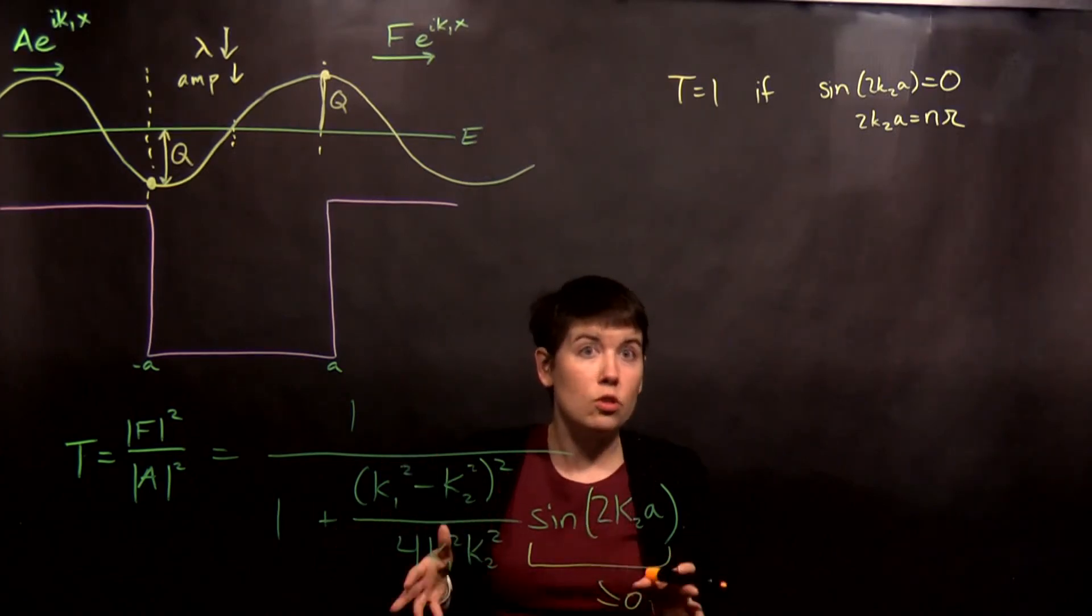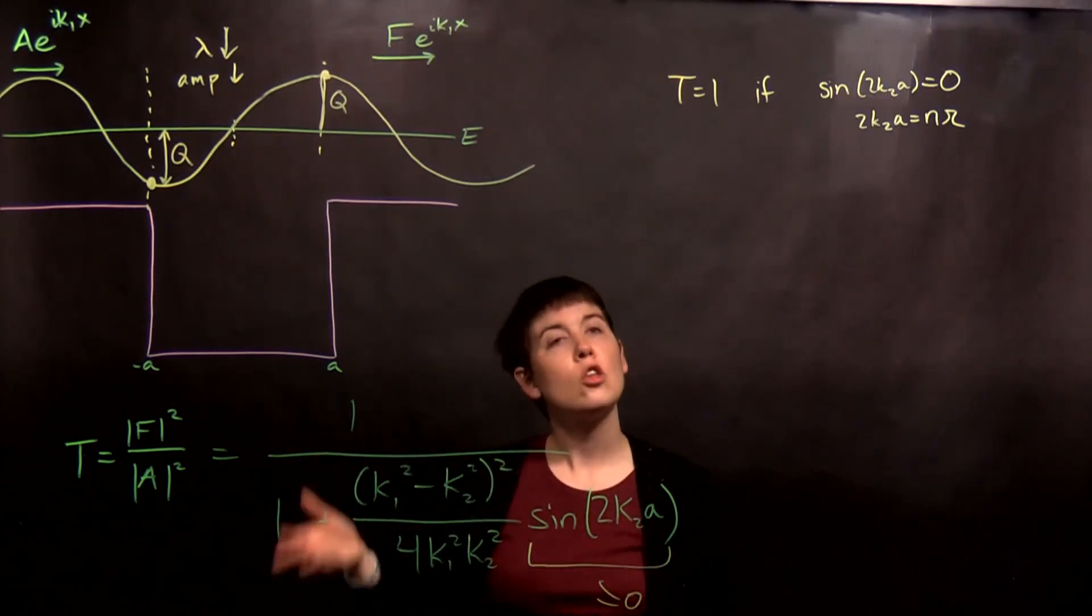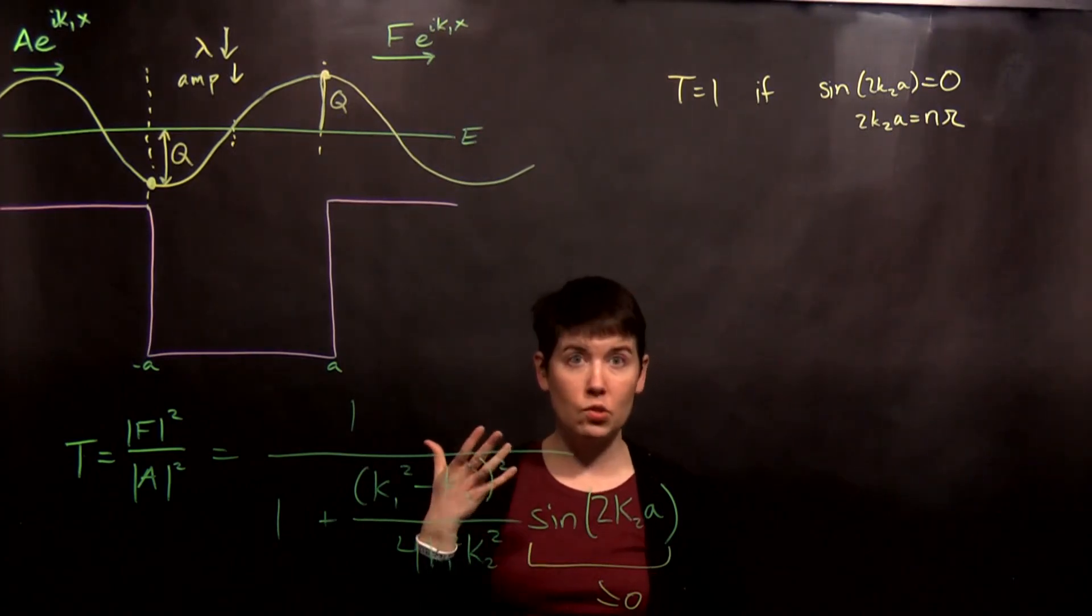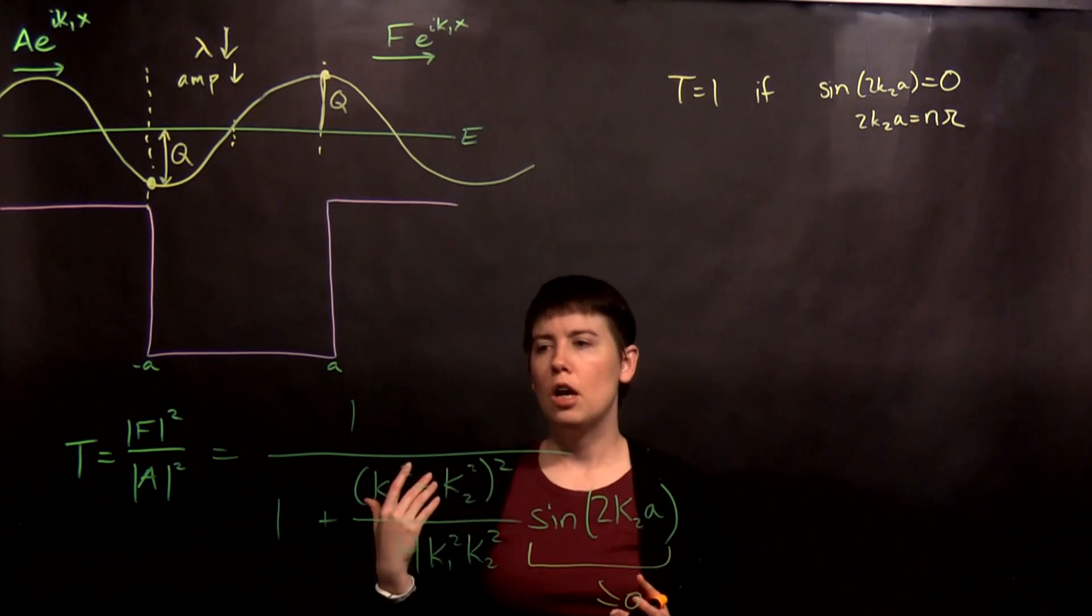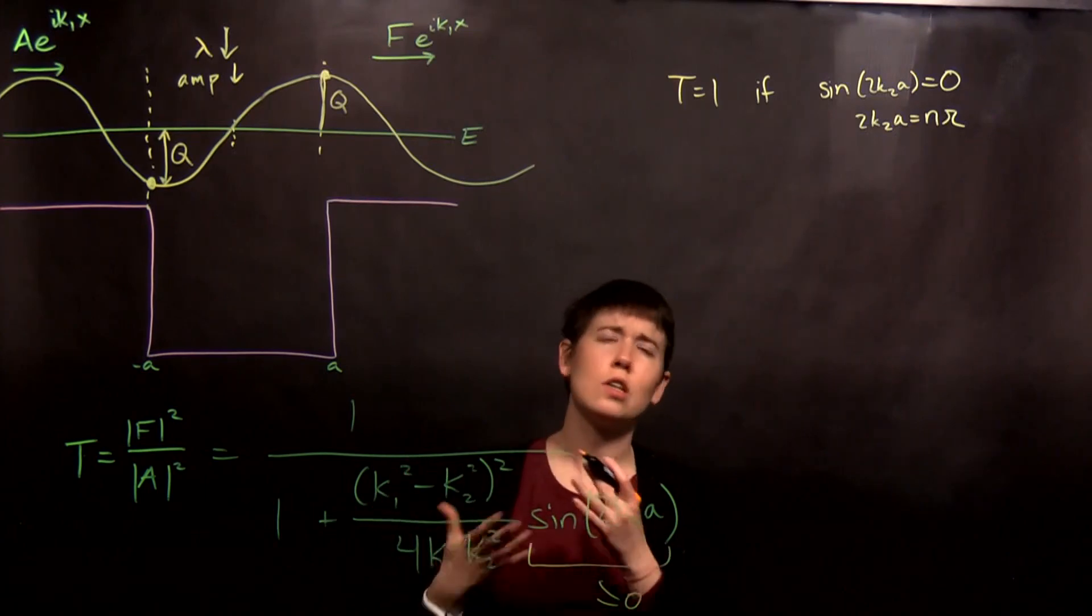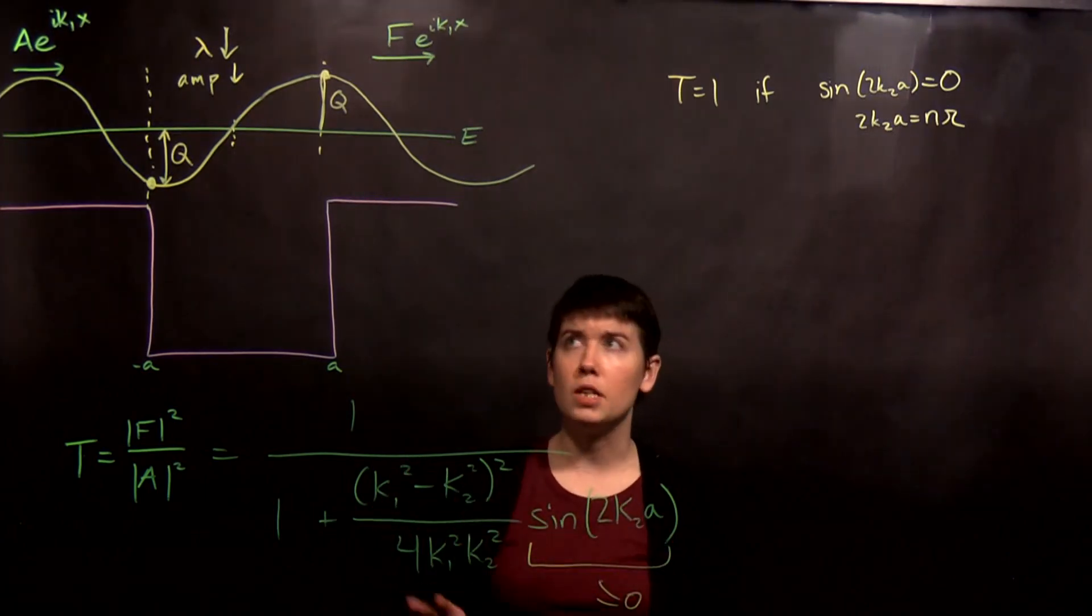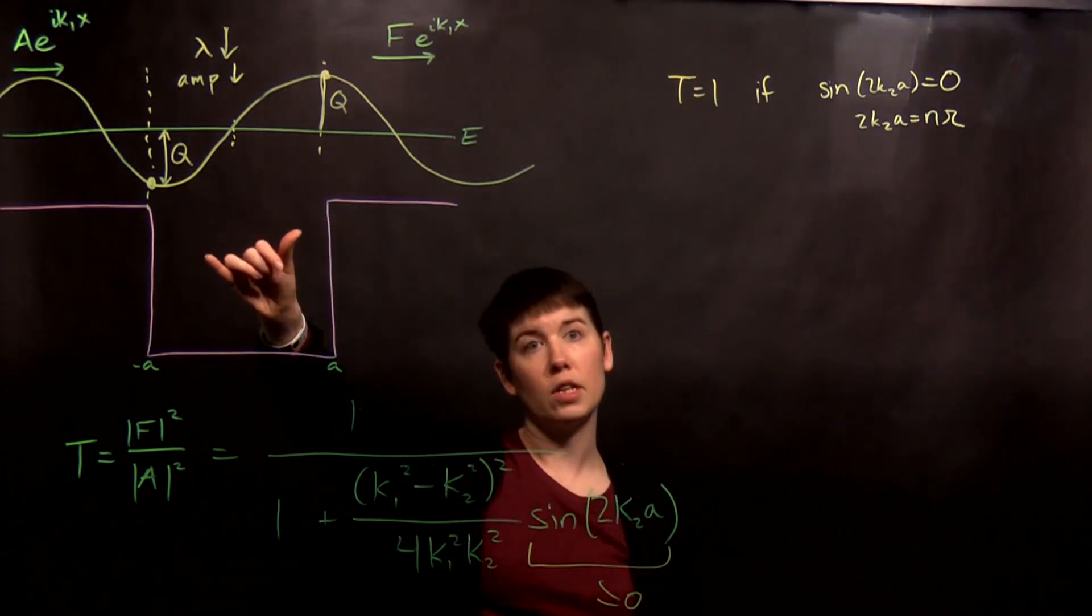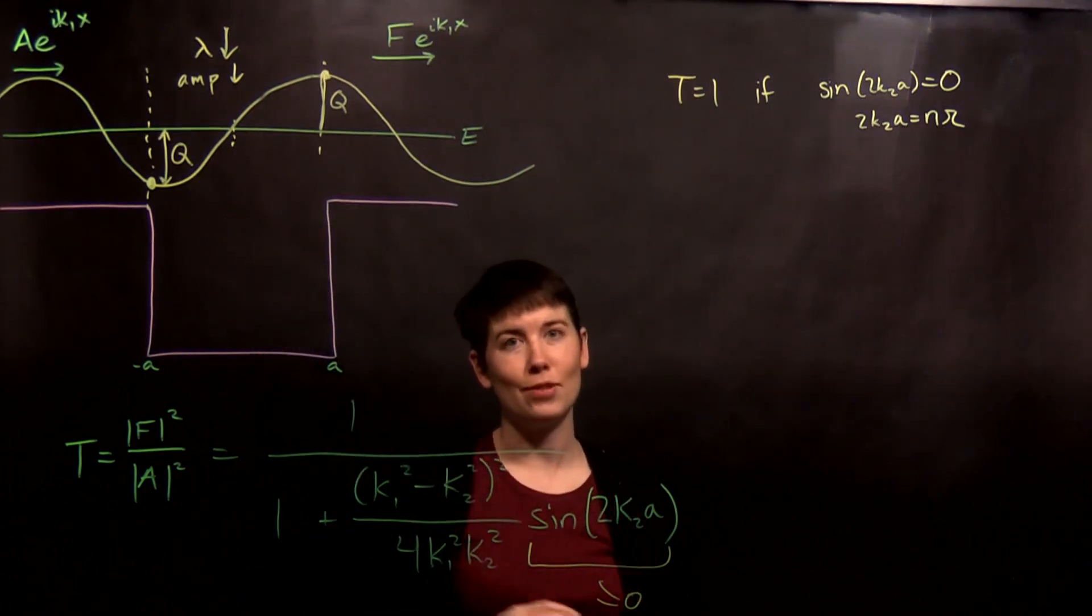Again, it's interesting to note that there are these special conditions. The book goes through the idea of making this analogous to some optics scenarios such as where you get total reflection, where you see colors. There are optics phenomena similar to this. And it really has to do with integer numbers of wavelengths whenever you have this change of potential.